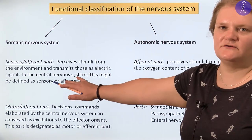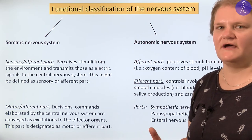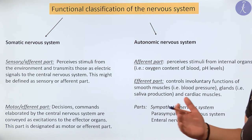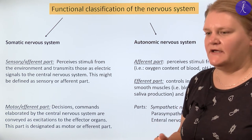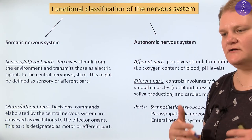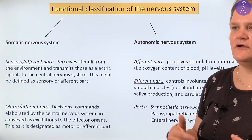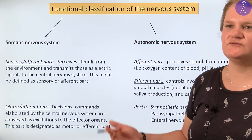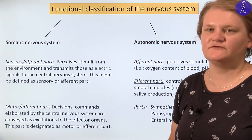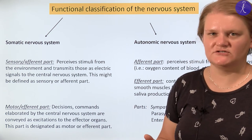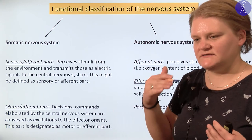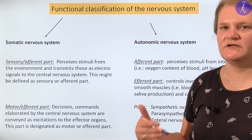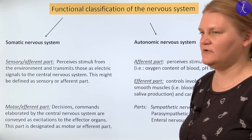In the case of the somatic nervous system, the information — the different kinds of stimuli — are coming from the environment, and when they reach our body, those signals are translated into electrical signals, which are then transmitted into the central nervous system. After that the central nervous system makes a decision, and based on this decision, commands are transmitted toward effectors, for example skeletal muscle.